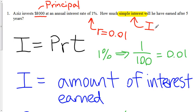So we have P, the principal. This tells me that R is equal to 0.01. And lastly, after five years, we have T. So T equals 5.